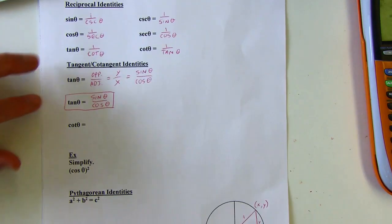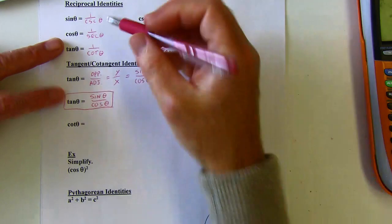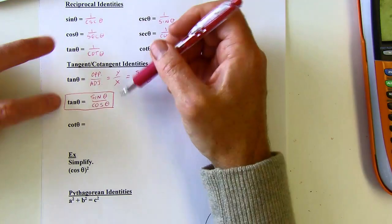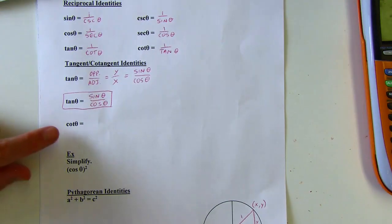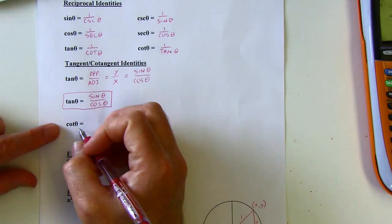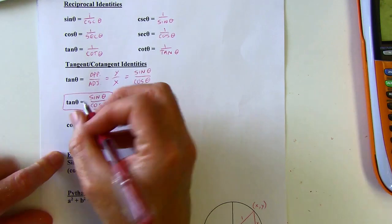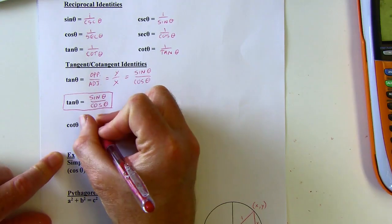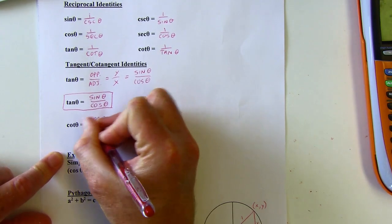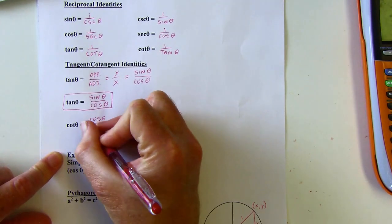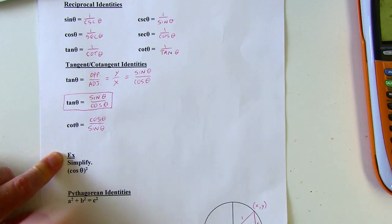We've got two different tangent identities. One is a reciprocal identity. The key tangent identity is that tangent of theta is equivalent to sine of theta over cosine of theta. And cotangent, since it's the reciprocal of tangent, is going to be equivalent to cosine over sine of theta.